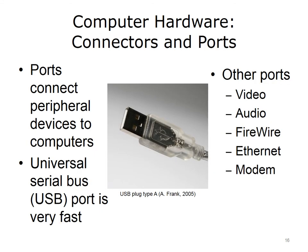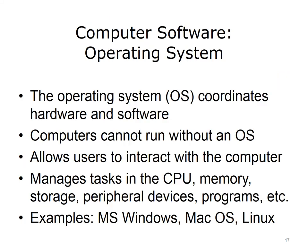Other parts of computer hardware are connectors and ports. Ports connect peripheral devices to your computer. Examples of peripheral devices are monitors, keyboards, mouse devices, printers, and network connections. A universal serial bus, or USB port, is very fast and is often used to connect these devices. But there are other ports on your computer as well. There are ports for video, audio, firewire, which is the Macintosh equivalent to USB, and the connections used for networks, such as an Ethernet or modem port. That is a good basic summary of the hardware involved with computers.